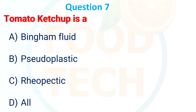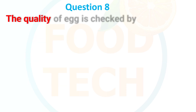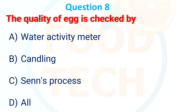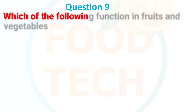The quality of egg is checked by: a) water activity meter, b) candling, c) candling, d) sintering process, e) all. The answer is candling.